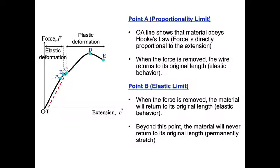Let's start with O. O is the original form. Point A is the proportionality limit. OA line shows that the material obeys Hooke's law. We learned about Hooke's law in school or even in chapter 5, where Hooke's law states that force is directly proportional to the extension. So, F is directly proportional to E. As long as it is in the line OA, when the force is removed, the wire will return to its original position.